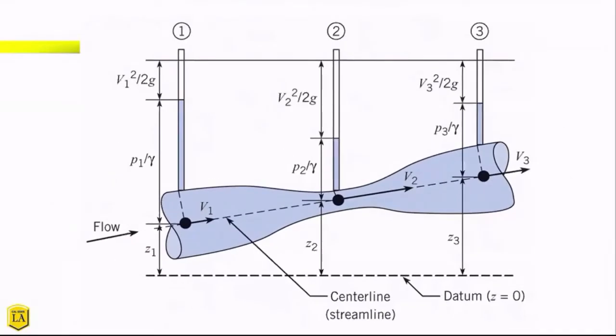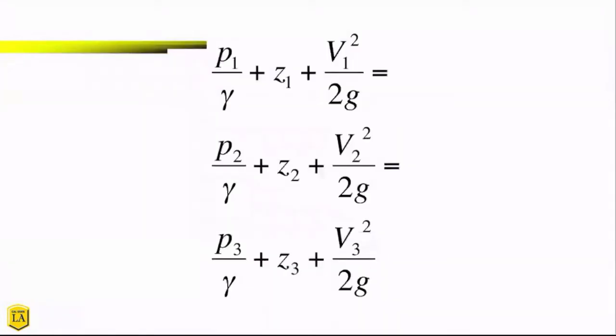This is showing something a little bit different, where we have our flow moving from one to two to three. We have our piezometric head for each point and you can see it's changing as we're moving along the system. And this line here, this represents the total energy in the system. You can actually set these up going from one to two to three or one to three or two to three.